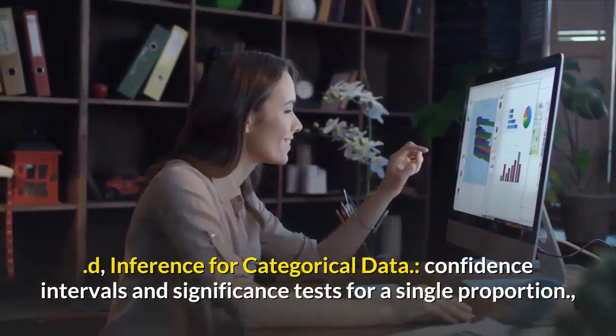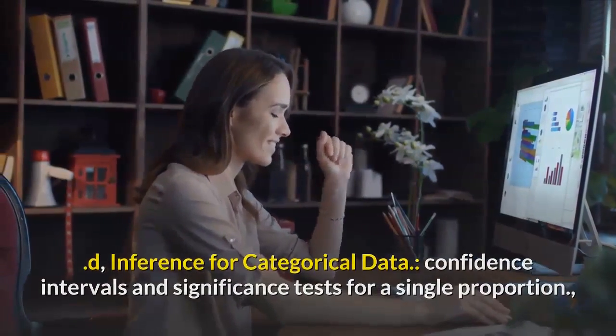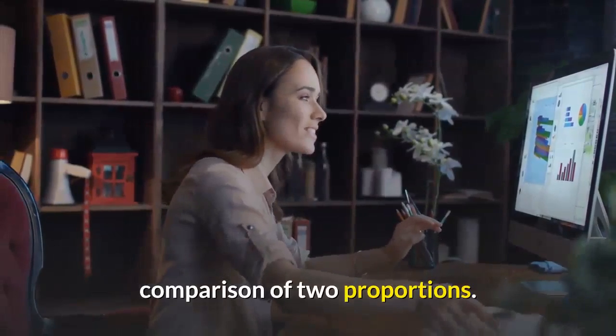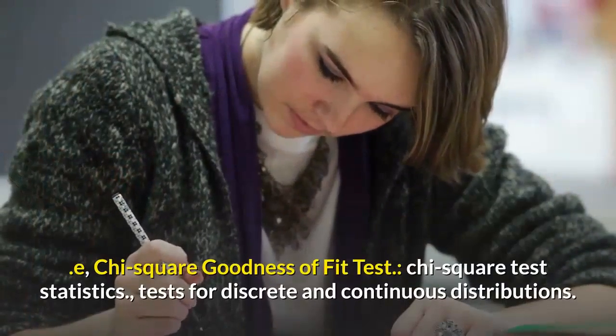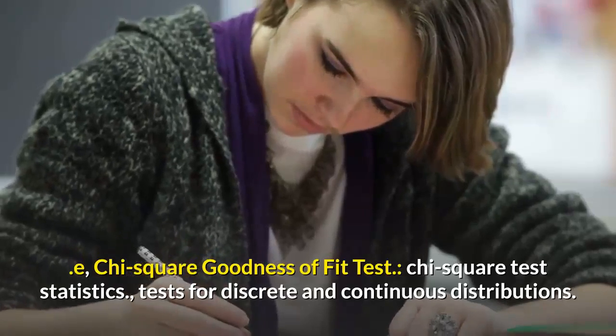D. Inference for categorical data: confidence intervals and significance tests for a single proportion, comparison of two proportions. E. Chi-square goodness of fit test: chi-square test statistics, tests for discrete and continuous distributions.